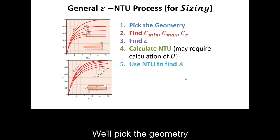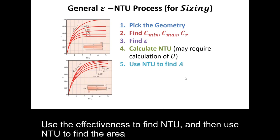The process for effectiveness NTU for heat exchangers when I'm looking for the sizing is the following. We'll pick the geometry. Find the fluid heat capacities and the ratio. Get the effectiveness. Use the effectiveness to find NTU. And then use NTU to find the area.